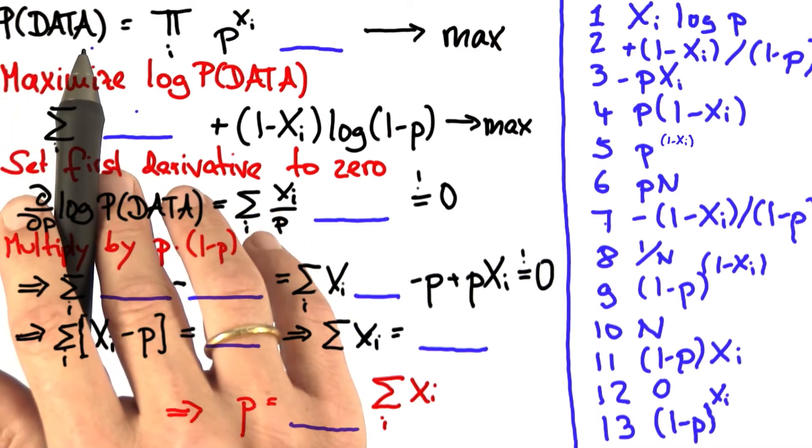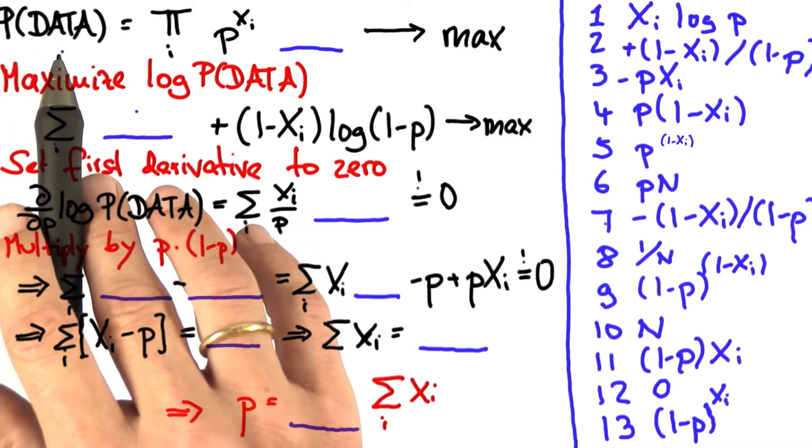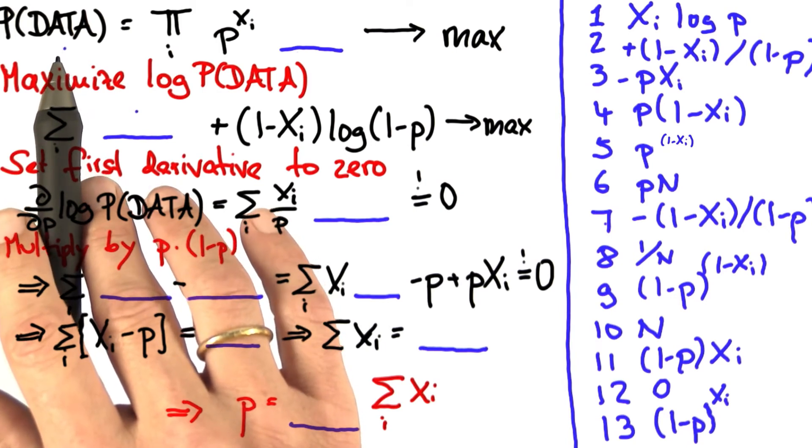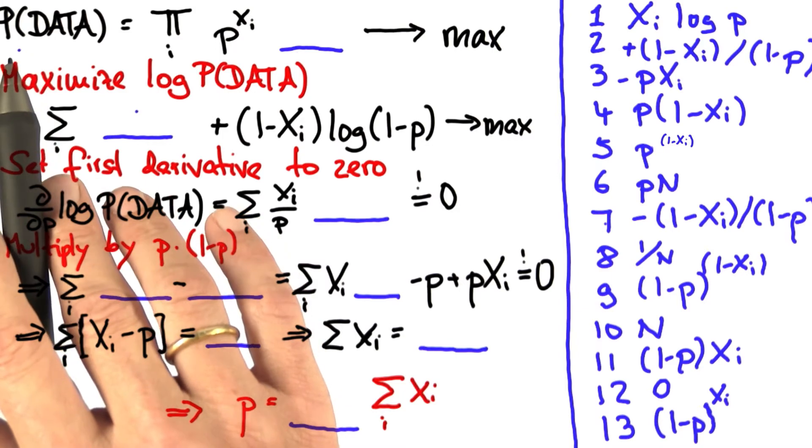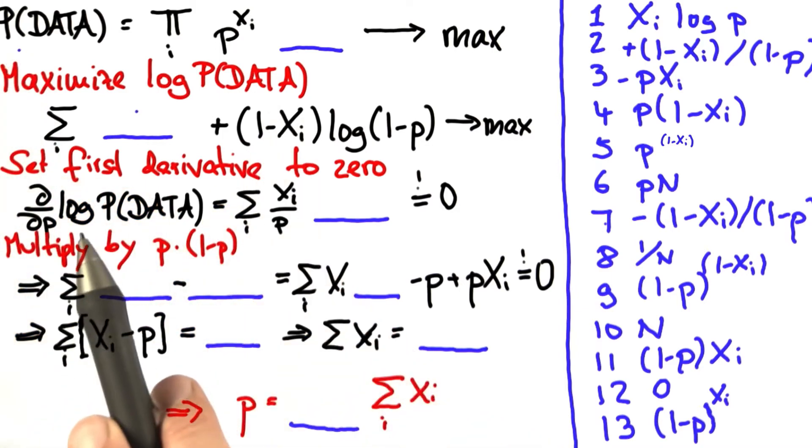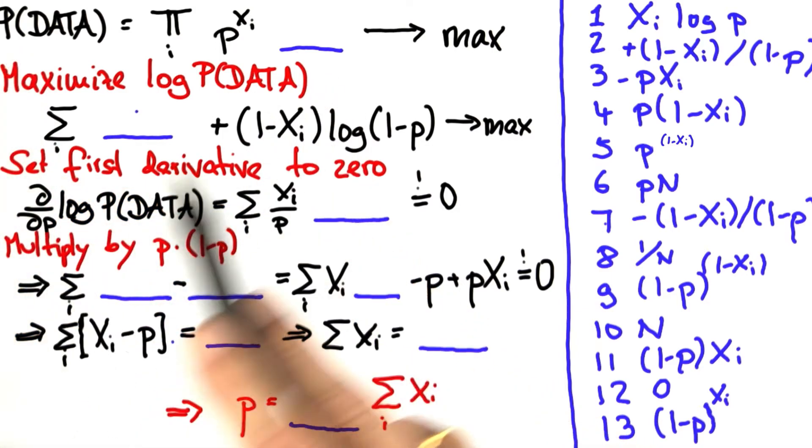You might remember data is comprised of xi's, where each xi is 1 for heads and 0 for tails. And of course, p is the desired probability of heads. I left open the derivation, however, nine steps by these nine bars that will turn into boxes very soon.